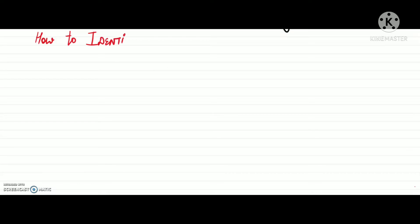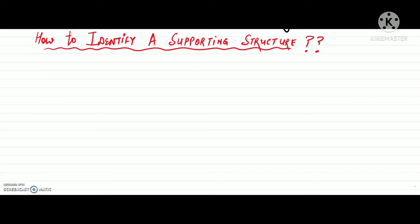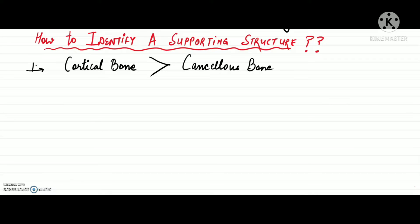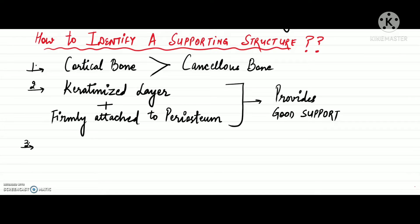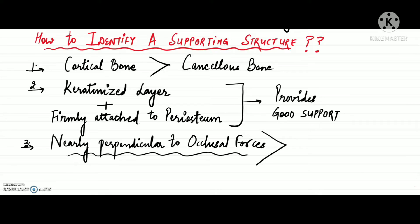How do we identify a supporting structure? Usually, a good cortical bone plate is capable of providing better support compared to cancellous bone. Structures covered by a keratinized layer and firmly attached to the underlying periosteum are capable of providing good support. Structures nearly perpendicular to the occlusal forces provide better support compared to structures that are sloping or steep, as those are at an angle to the occlusal forces and cannot provide good support to the denture.